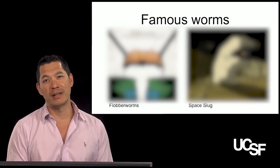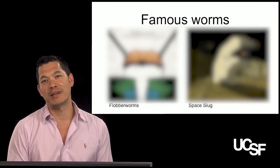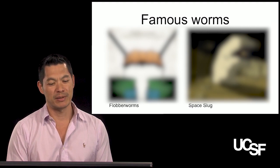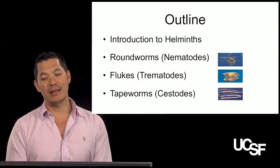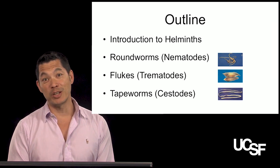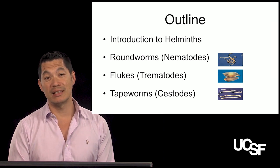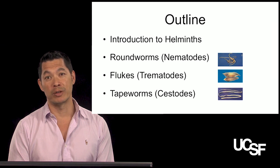First I thought it would be fun to start off with some of the famous worms you might know from fiction and movies. The one on your left is Flubberworm from Harry Potter, and the one on the right is Space Slug from the Star Wars series, particularly The Empire Strikes Back. This is an outline of the two videos — in this video we'll focus on the introduction to helminths and roundworms.